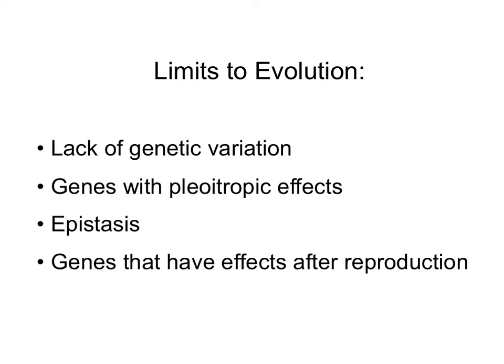Epistasis can also limit evolution. Epistasis is when the expression of one gene depends on the expression of another gene. It will be more difficult for selection to favor a certain allele when it has to simultaneously favor the second gene that is affecting the expression of the first one.